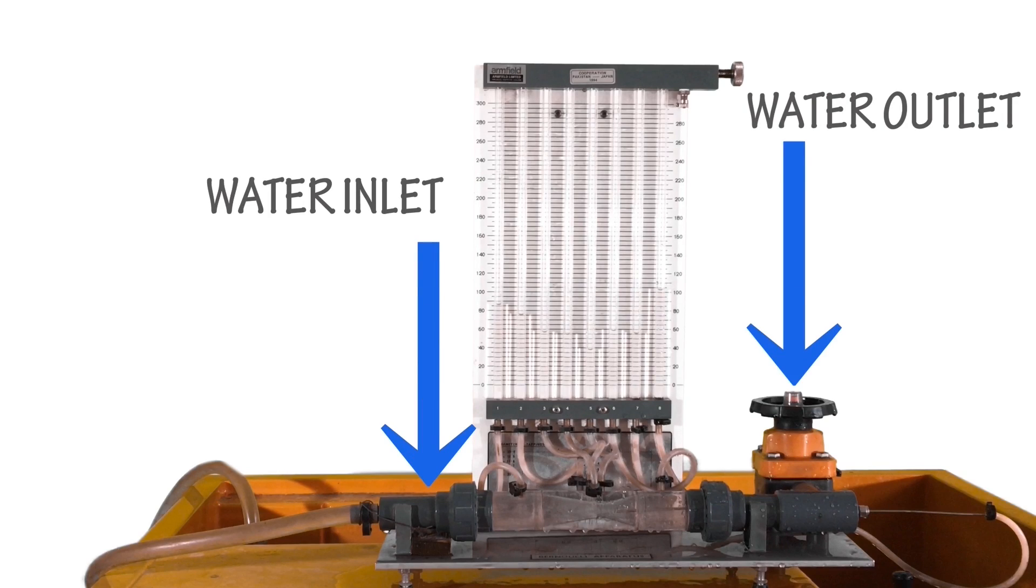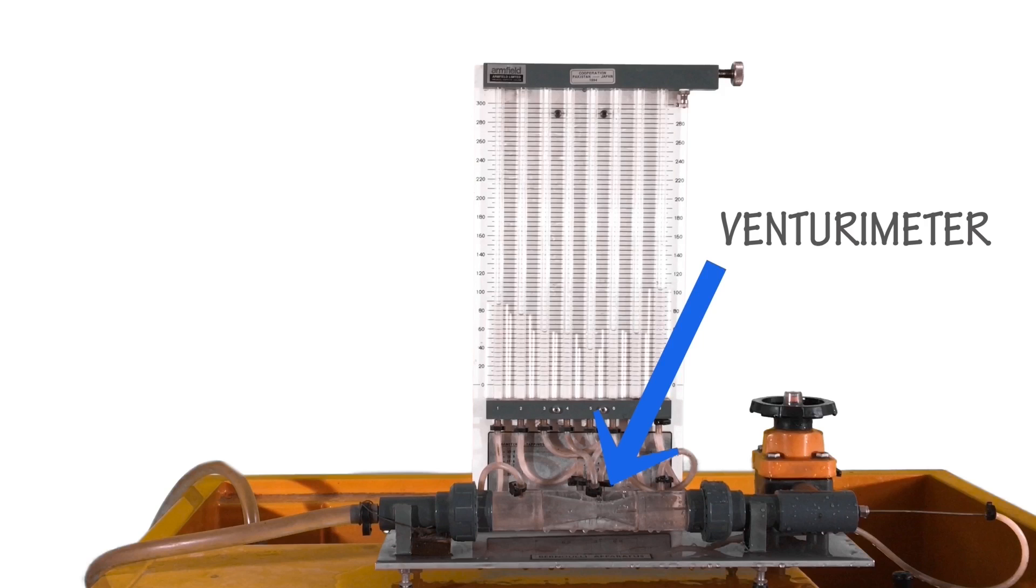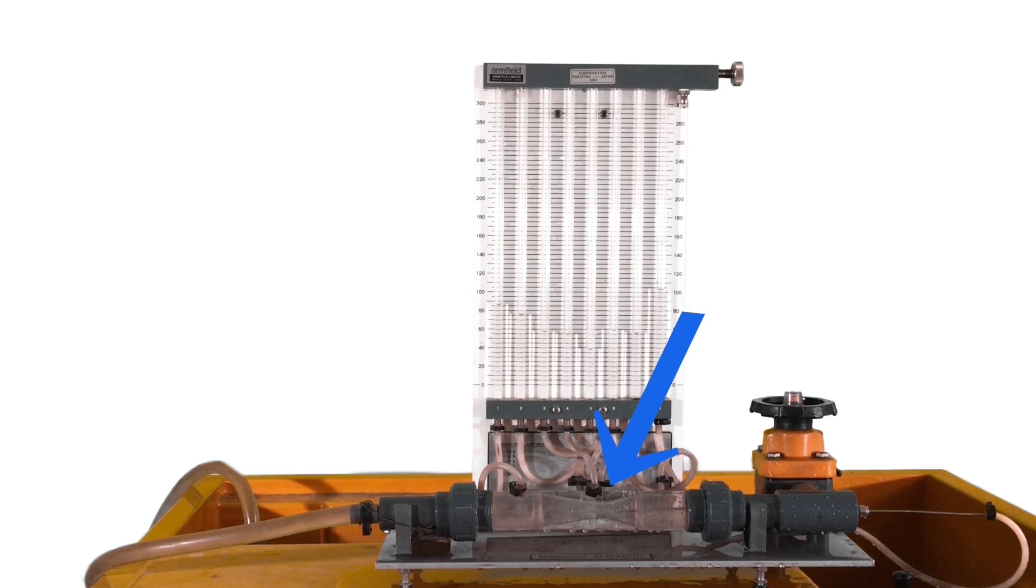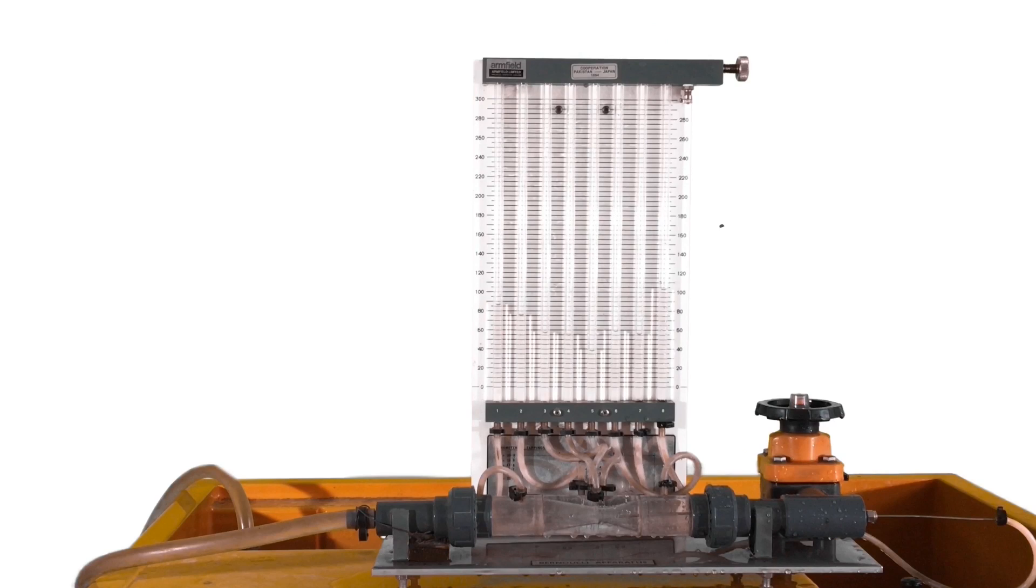First thing to note are the water inlet and outlet pipes. Where these flexible pipes connect to is called the venturi meter. This is the air head screw used to remove air from inside the apparatus. There are a total of eight manometers, each one connected to its respective tapping point.